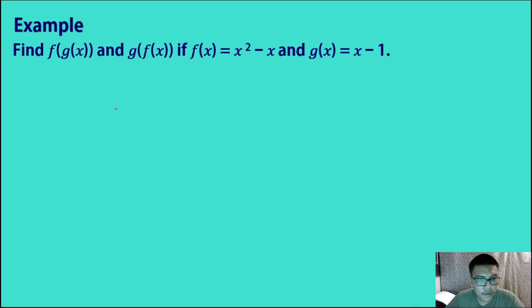Find f of g of x and g of f of x. If f of x is equal to x squared minus x, and g of x is equal to x minus 1. So una natin hanapin syempre yung f of g of x. So given x squared minus x, f of g of x will be equal to...